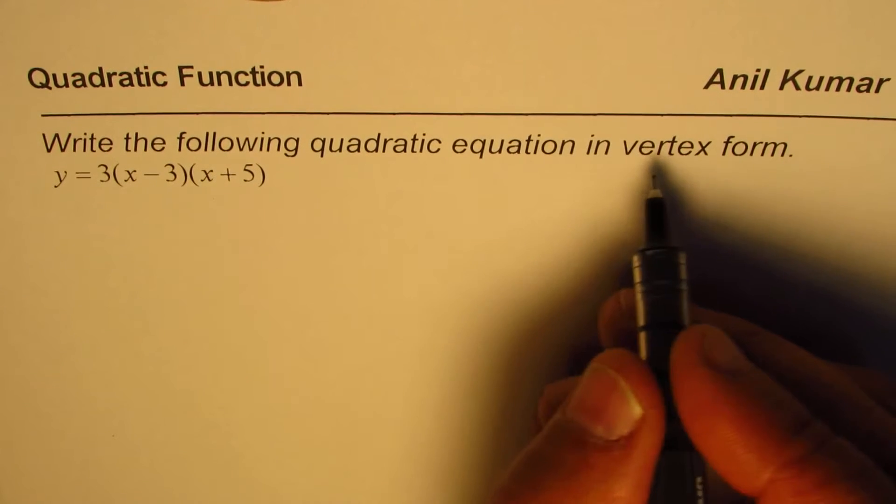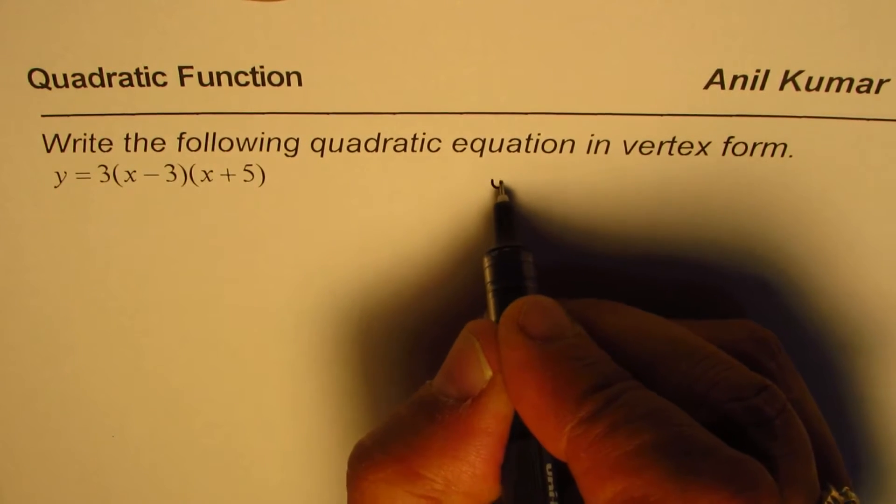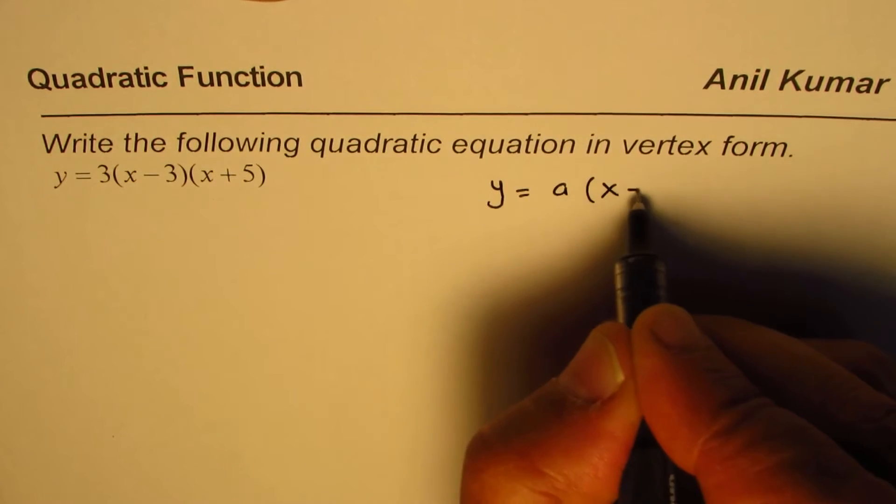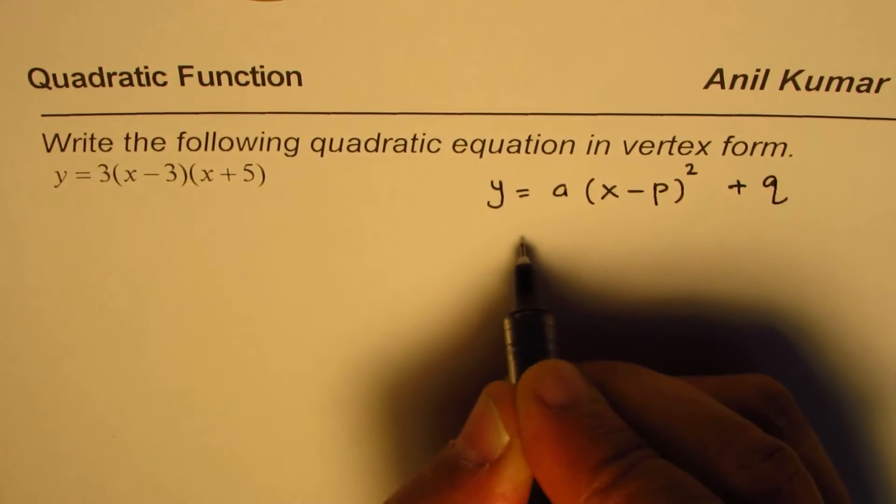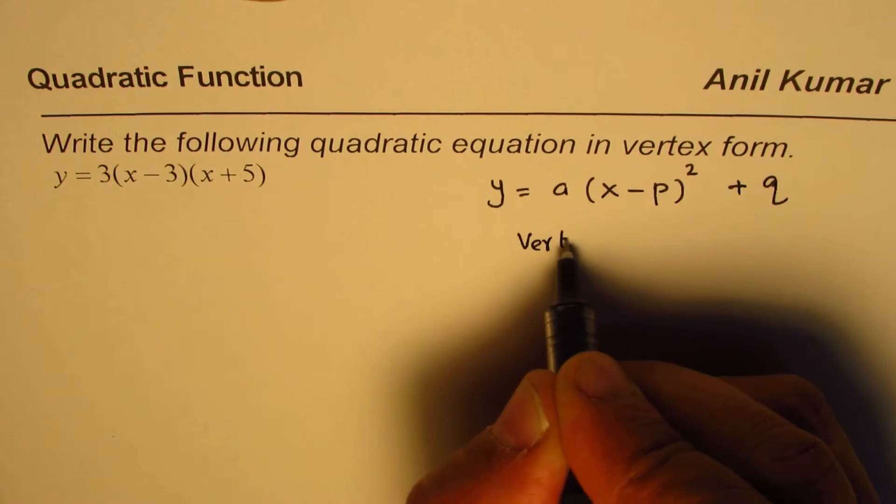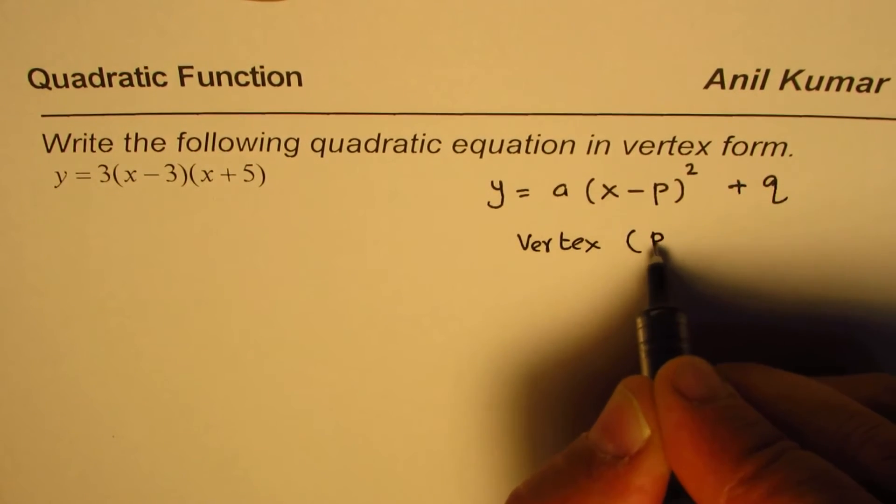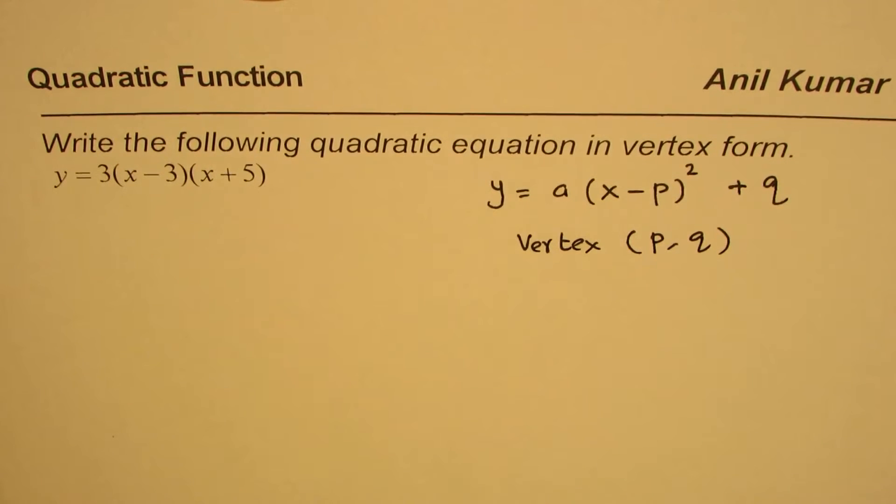Now as you know, vertex form of a quadratic equation is y equals a times x minus p whole square plus q, where the vertex is p, q. So that is the vertex form.